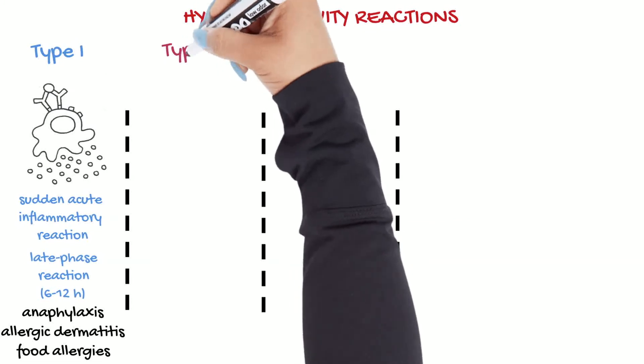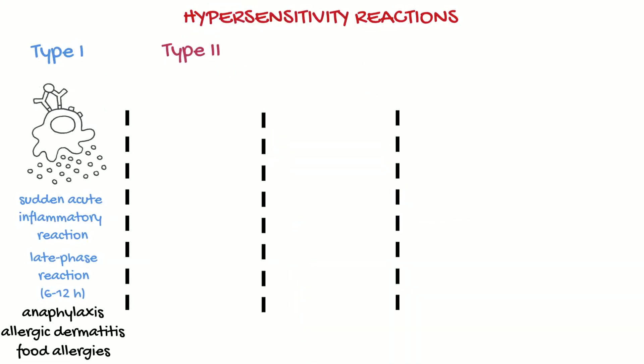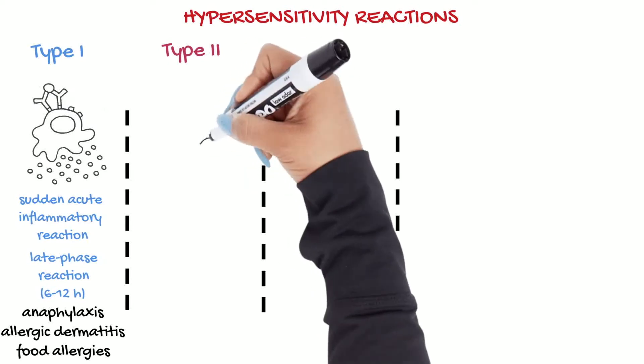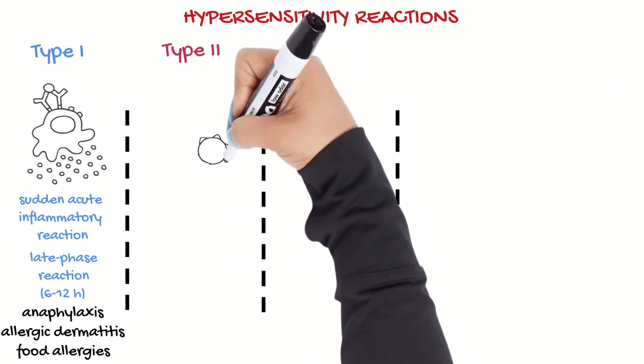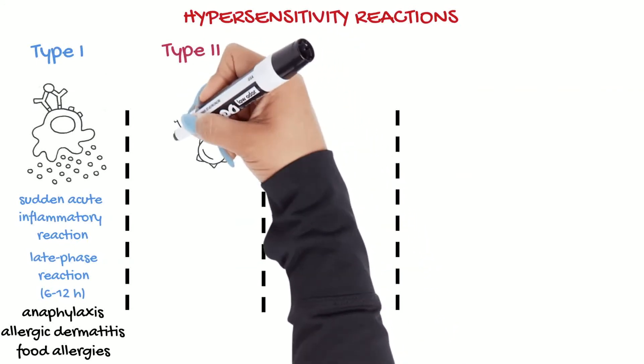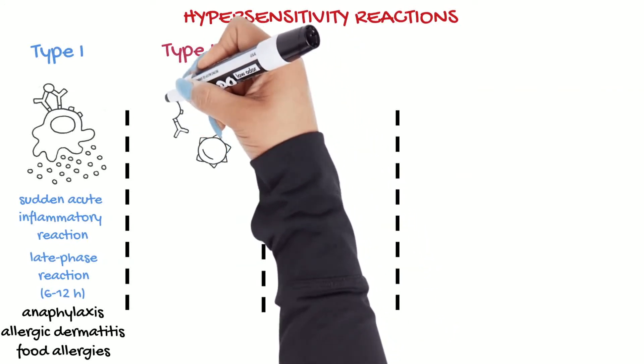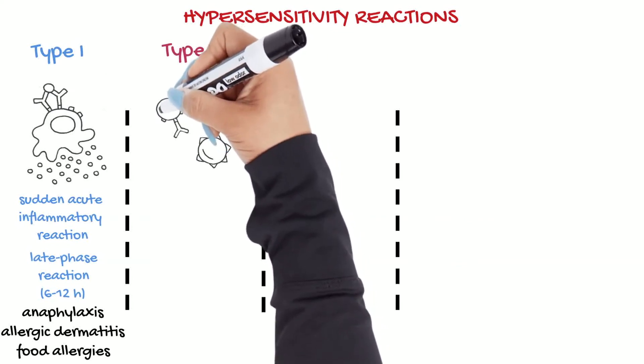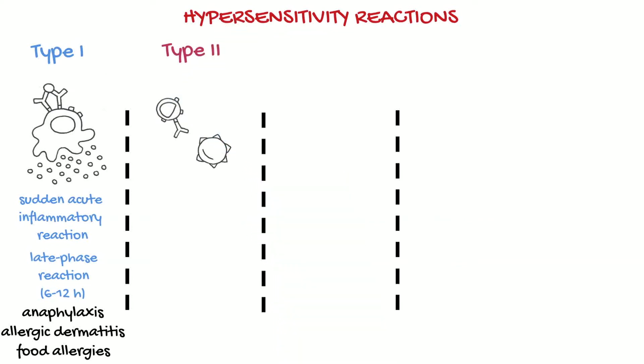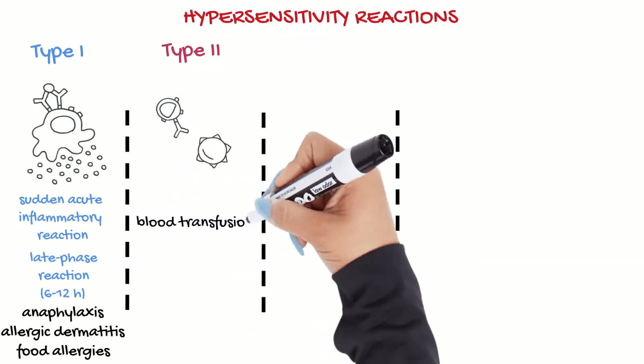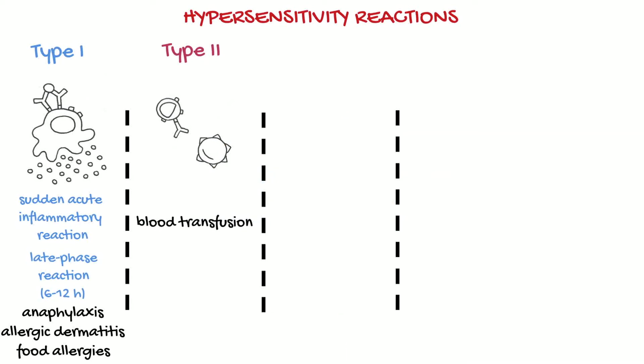Type 2 hypersensitivity are reactions that are mediated by antibodies and occur with blood transfusions. Red cells have cell surface molecules that act as antigens. So if blood is transfused from an animal to another, the red cells' antigens will stimulate an antibody response that will cause the rapid elimination of the transfused red cells with intravascular hemolysis.